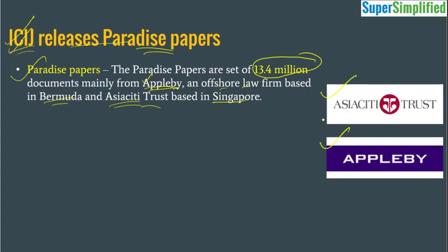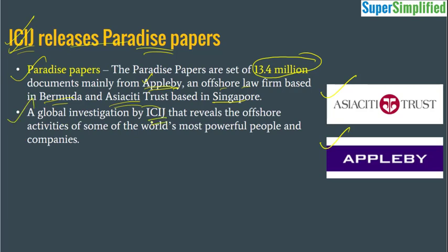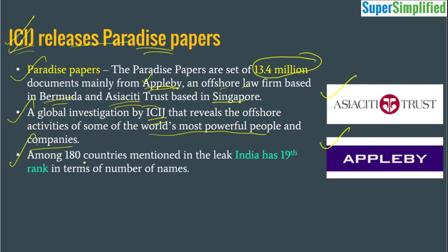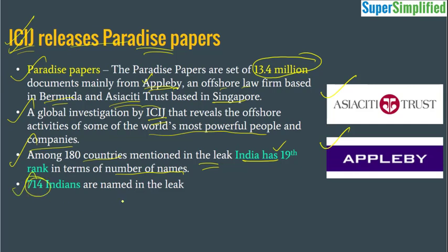So the two companies involved are Asia City Trust based in Singapore and Applebee based in Bermuda. A global investigation by ICIJ has revealed the offshore activities of some of the world's most powerful people and companies. The same thing happened in the Panama Papers leak, and there were serious repercussions — for example, the Prime Minister of Pakistan, Nawaz Sharif, had to resign because of the ramifications of the Panama Papers leak. Among 180 countries mentioned in the leak, companies or individuals belonging to these 180 countries were operating through these firms in the tax havens. India has the 19th rank in this list in terms of the number of names — not in terms of amount, but in terms of the number of people involved. There are 714 Indians named in the leak.